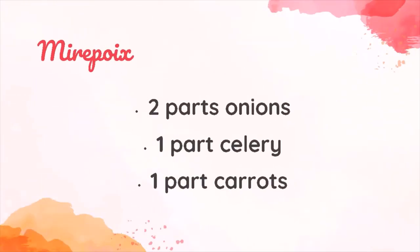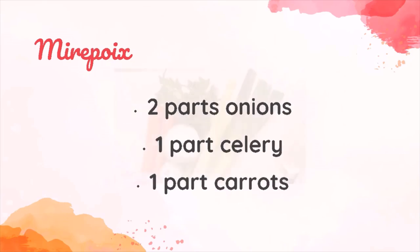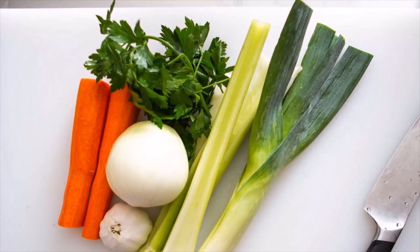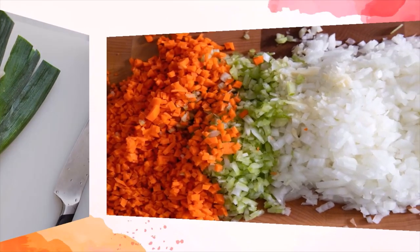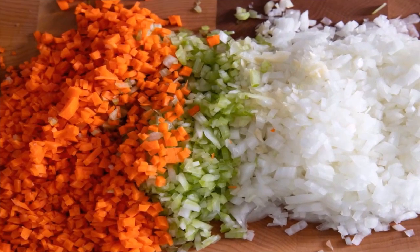Mirepoix usually includes two parts onions, one part of celery, and one part of carrots. Mirepoix is a mixture of coarsely chopped vegetables that is used in a stock to add flavor, nutrients, and color.